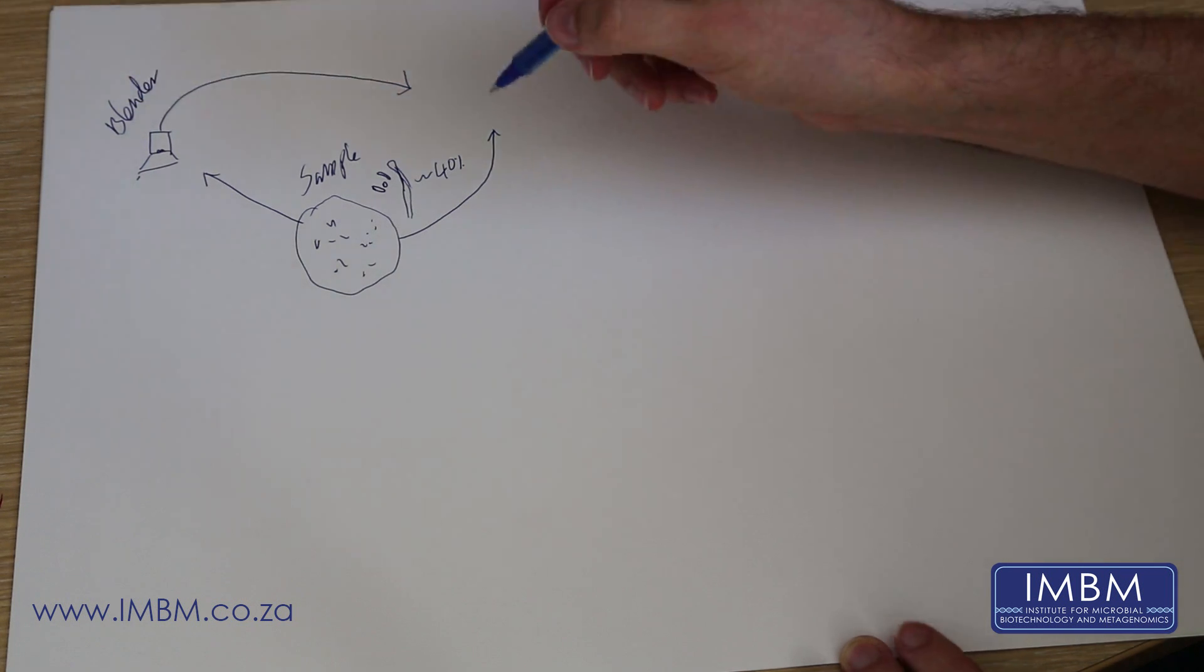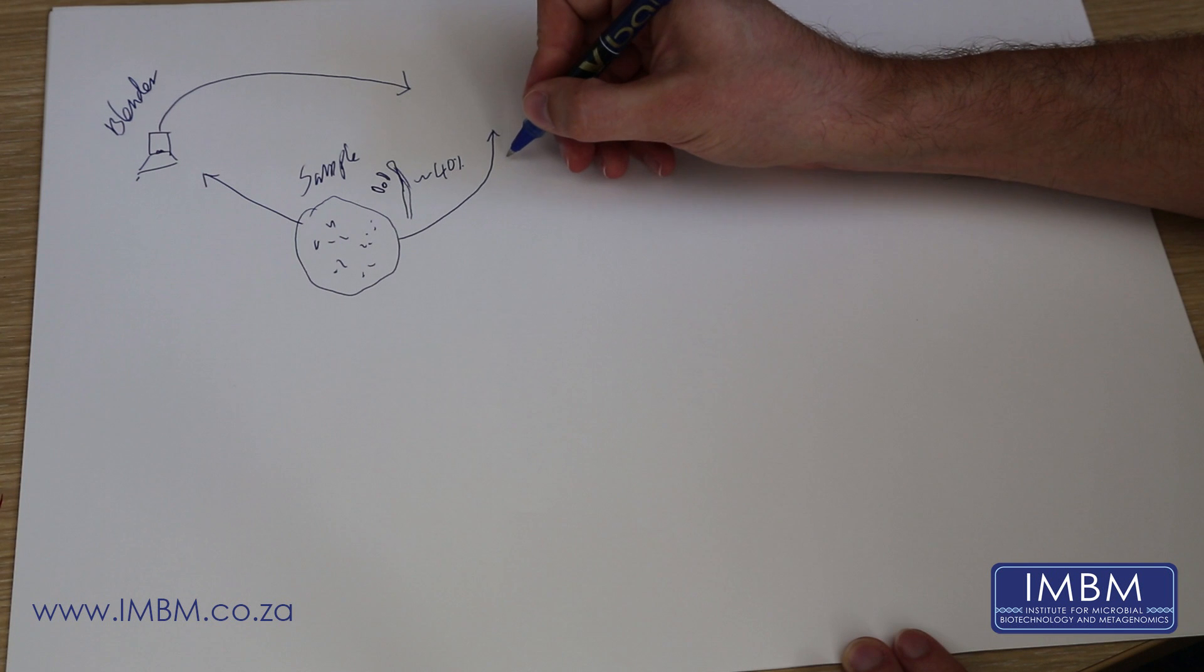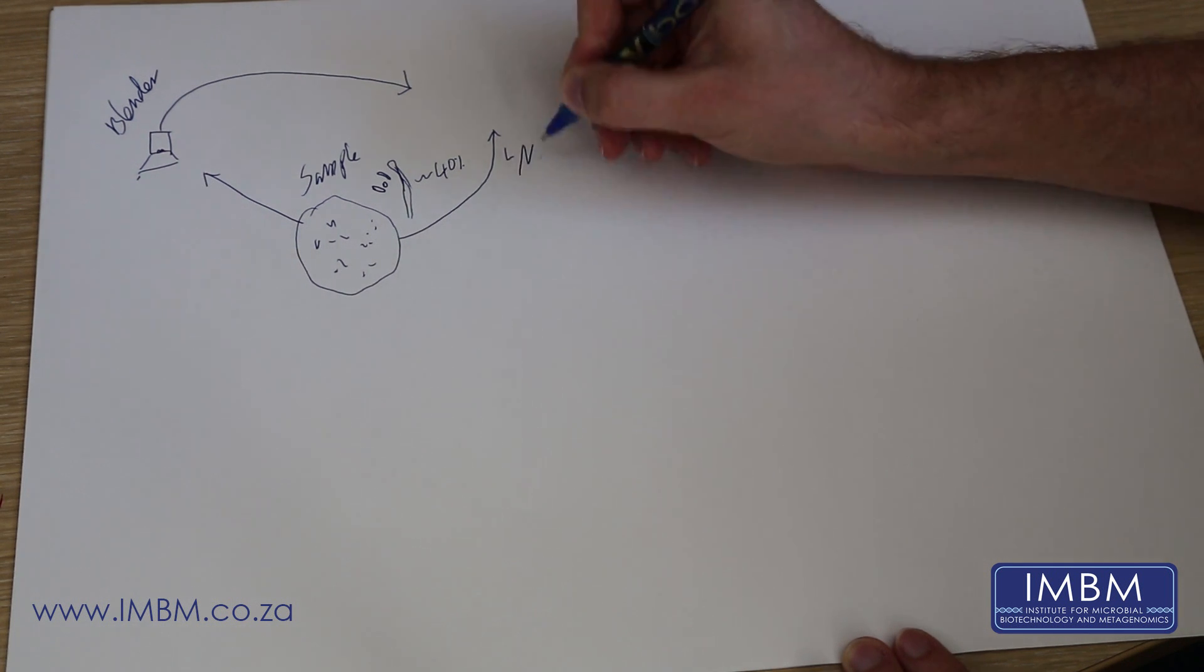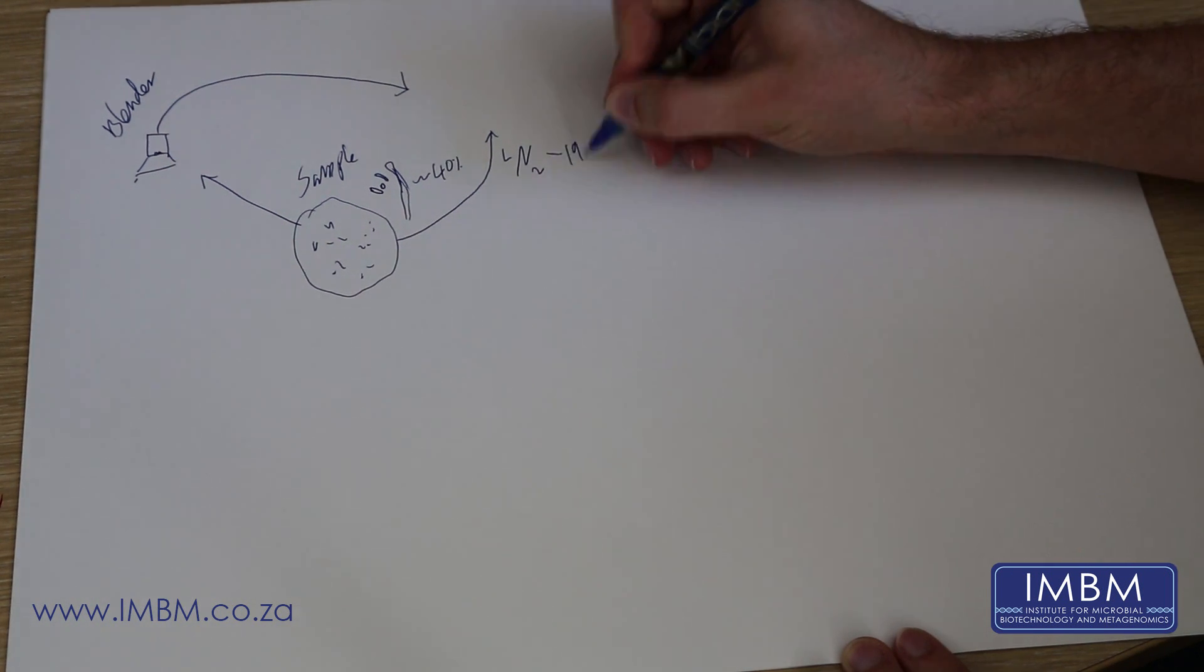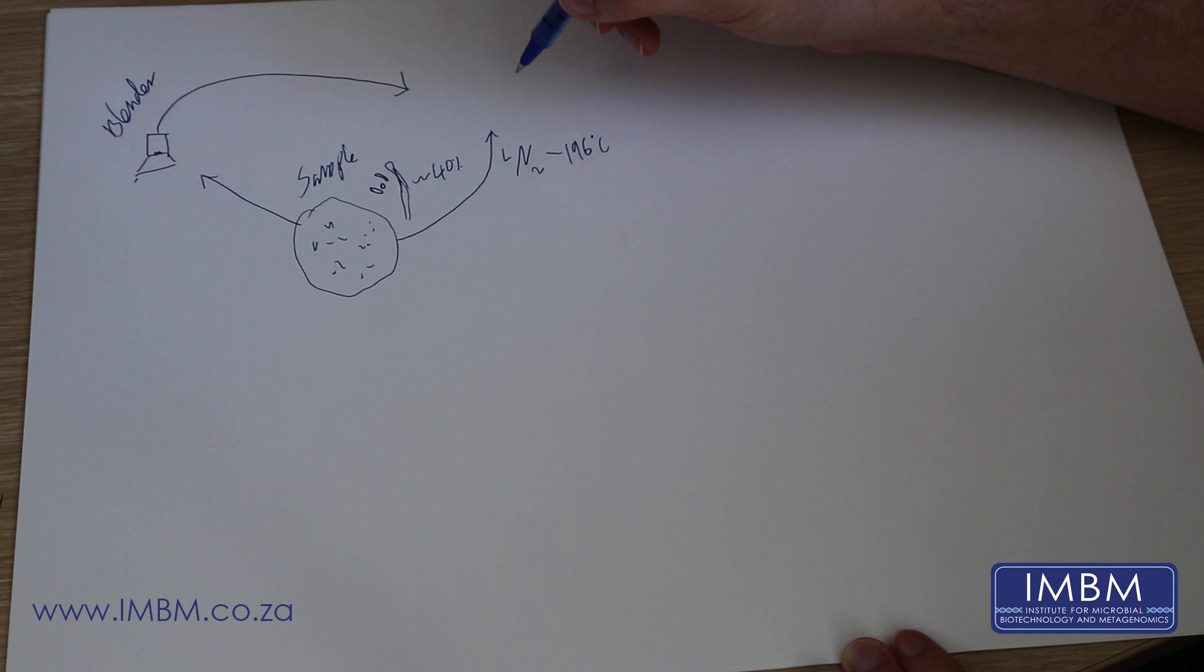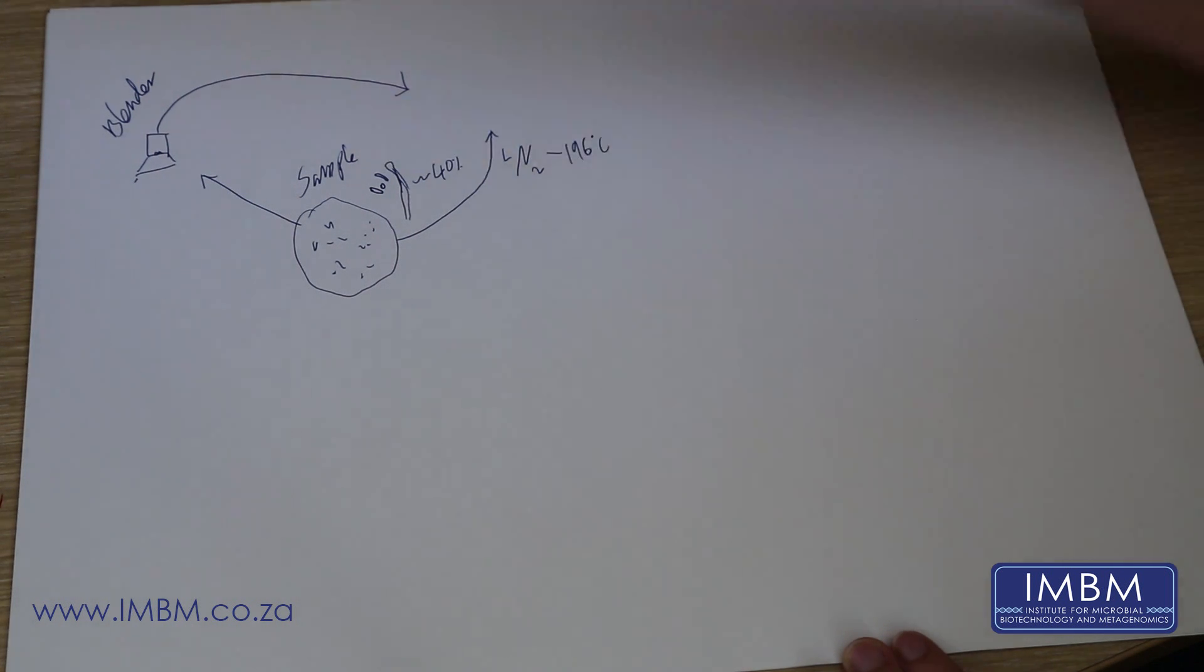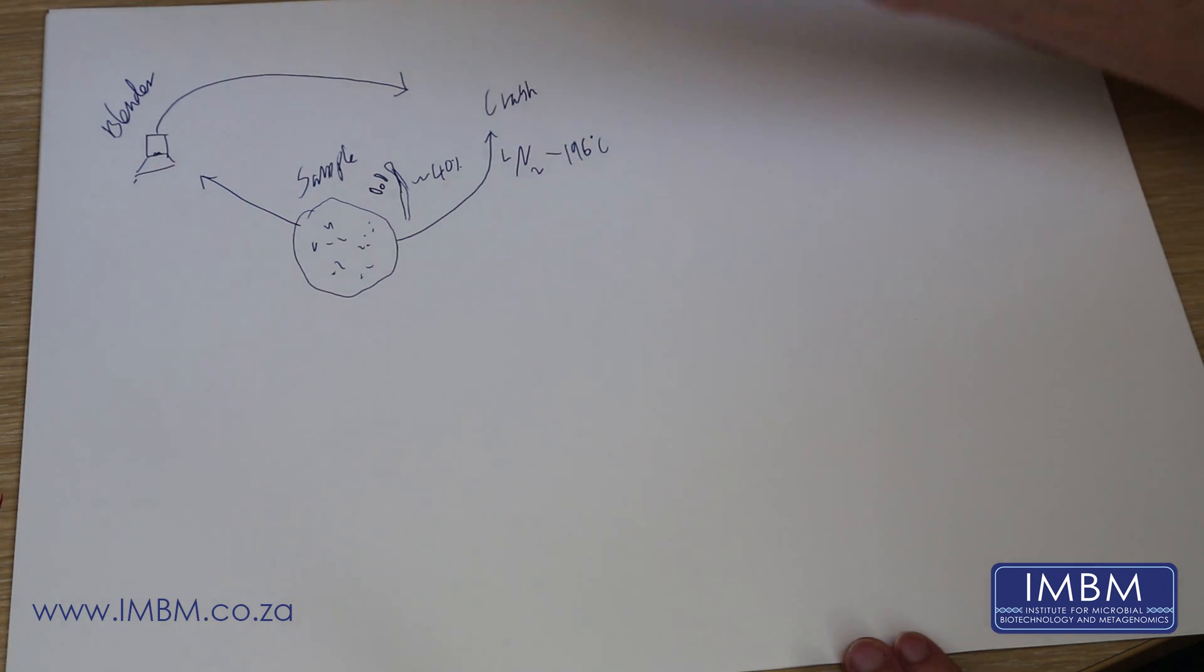So that's your blender. With this method, you basically freeze with liquid nitrogen at minus 196 degrees Celsius, which is approximately 77 Kelvin if I can do my maths right. And you freeze it with this and you crush in a pestle and mortar.